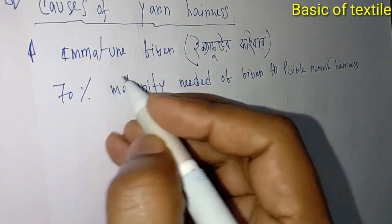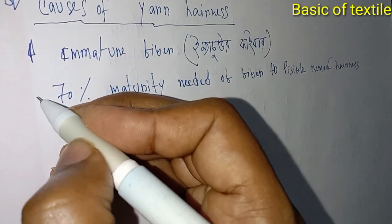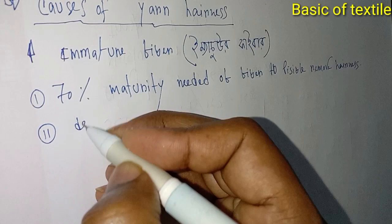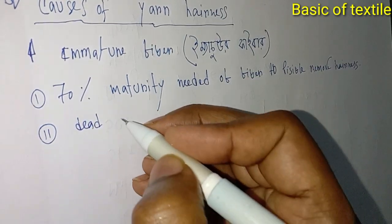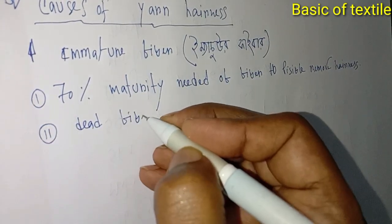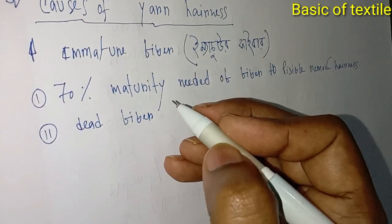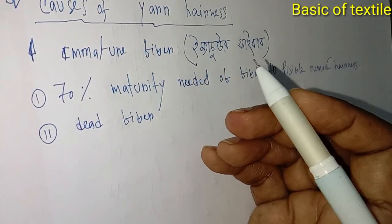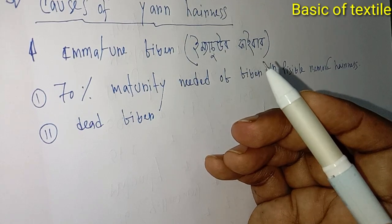Then the second cause is dead fiber. The higher the dead fiber content, the more yarn hairiness will appear.